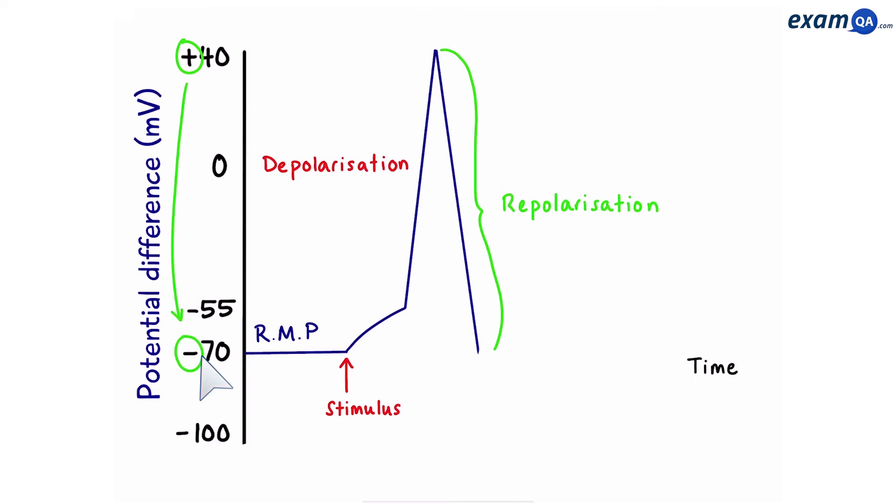However, all these potassium channels that have opened are very slow to close. Meaning, some extra potassium ions leave. Causing the membrane's charge to become even more negative. This part is called hyperpolarization. However, eventually, all those extra potassium channels have closed, and the membrane's resting potential goes back to minus 70, which is also known as the resting membrane potential.